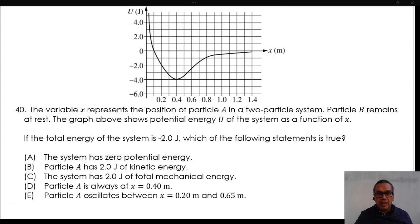The graph above shows potential energy U of the system as a function of X. If the total energy of the system is negative 2.0 joules, which of the following statements is true?